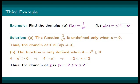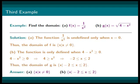So, we know our domain for function g is x has to be greater or equal to negative 2 and less or equal to positive 2. So, in conclusion, our answer will be domain for function f is x cannot equal 0 and domain for function g is x has to be greater or equal to negative 2 and less or equal to positive 2.